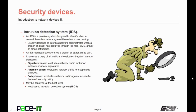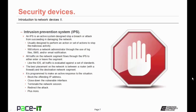The standards used may be signature-based — evaluating network traffic for known malware or attack signatures. Or the standard may be anomaly-based, evaluating network traffic for suspicious changes. Or it may be policy-based, evaluating network traffic against a specific declared security policy. An IDS may be deployed at the host level — when deployed at the host level, it's called a host-based intrusion detection system, or HIDS.